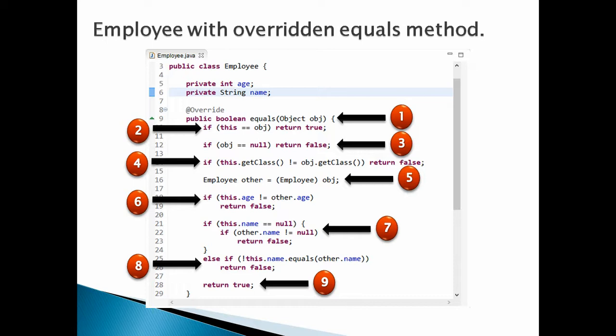Number three, second check: if the object coming to the equals method has a null value, then return false. It signifies that the object calling the equals method doesn't have a null value, but the object coming to the equals method is null, so the equality of both 'this' and the incoming object is false.